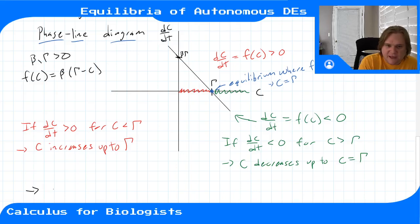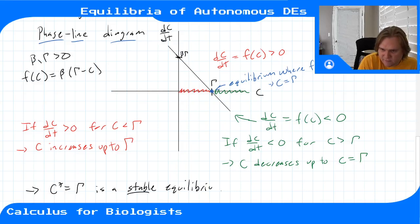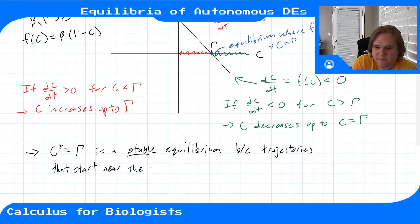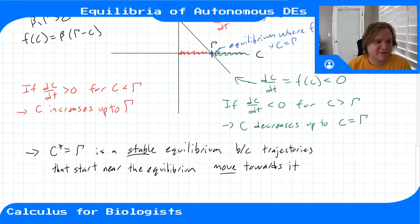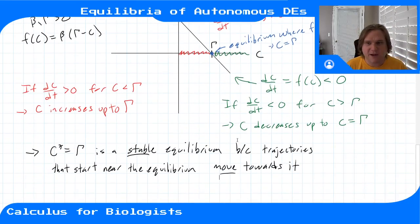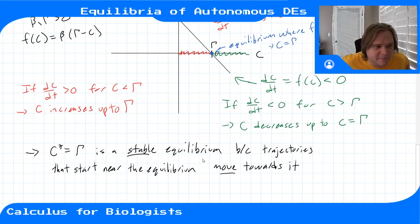We say c* = γ is a stable equilibrium because trajectories that start near the equilibrium point move towards it. This is exactly the same definition of stability as in discrete time systems — just now we're looking at the sign of f(c) rather than cobweb diagrams. A stable equilibrium point will often be the eventual state of the system if we let it evolve naturally.